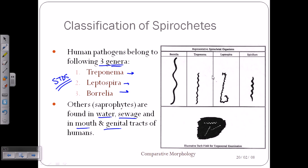Looking at morphological characteristics, Borrelia is the largest among them and has a flat spiral. Spirillum is very short but highly curved. Leptospira has the most curved nature and is rounded at one end. Treponema has a basic curvature and is similar in length to Leptospira. In dark field microscopy, we can visualize these differences.